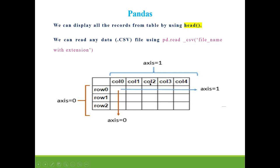Whenever we have data in tabular form, we can use the pd.read_csv function to read the data available in tabular form. We have to provide the file name with the extension. The extension is .csv, as the file will be in .csv format, so we need to provide the file name with the extension.